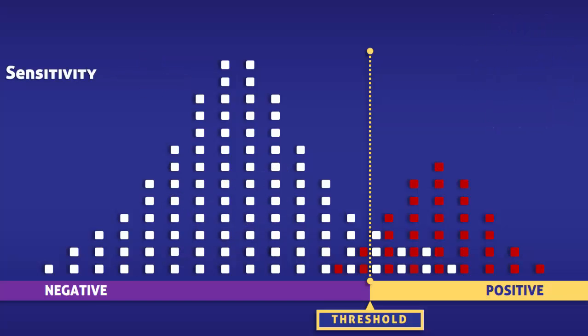When calculating sensitivity, we need to look at the position of the red squares in relation to the yellow line. To the left of the line, we have the false negatives, and to the right, the true positives. To calculate the sensitivity, we must divide the number of true positives by the total number of people with the condition.